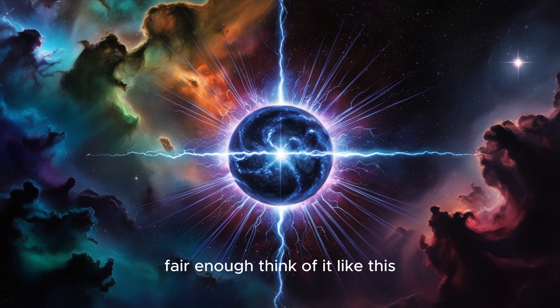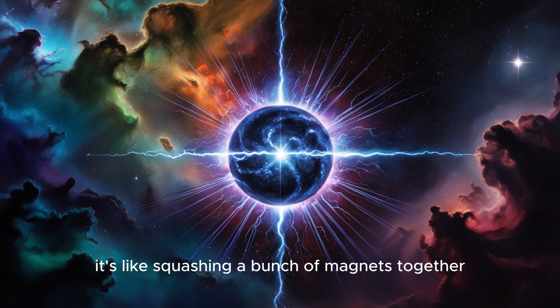Our sources mentioned something about conservation of magnetic flux, but honestly that went a little over my head. Fair enough. Think of it like this: imagine a star's magnetic field as a bunch of rubber bands stretched across its surface. As the star's core collapses during a supernova, those rubber bands get squeezed together, compressing the magnetic field into a much smaller space.